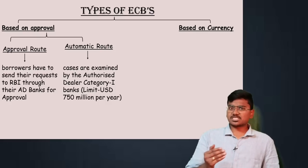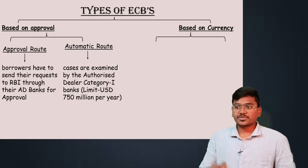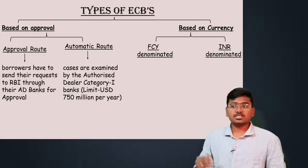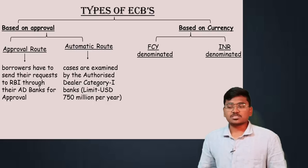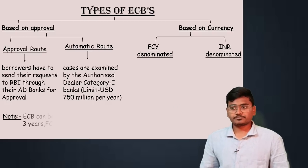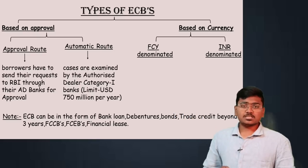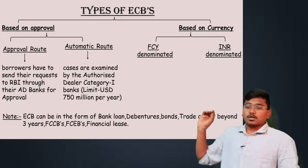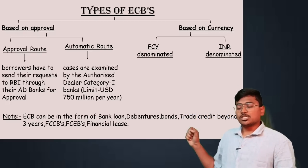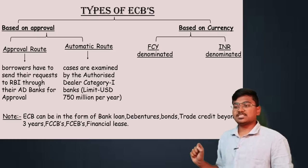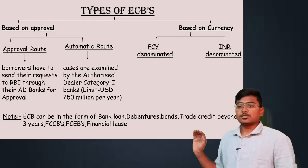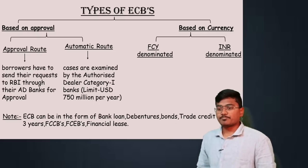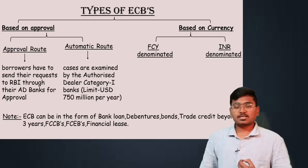Moving to the second category — based on currency — ECBs can be raised in two types of currencies: foreign currency denominated ECBs and Indian Rupee denominated ECBs. Note that ECB can be in the form of a bank loan, debentures, bonds, trade credit beyond three years, FCCBs, FCEBs, and finance lease.